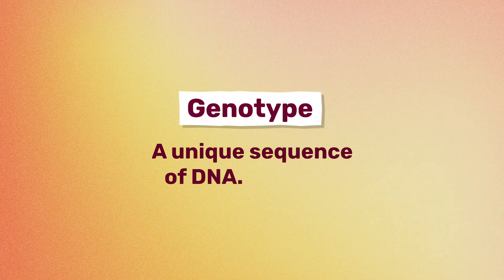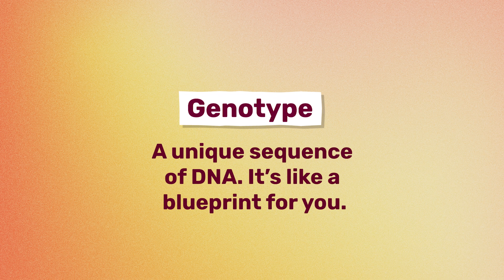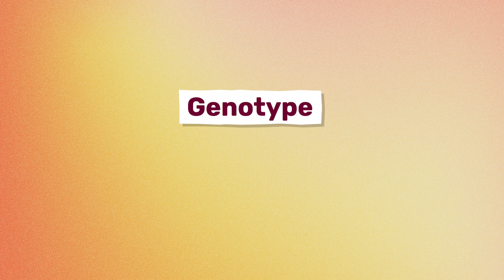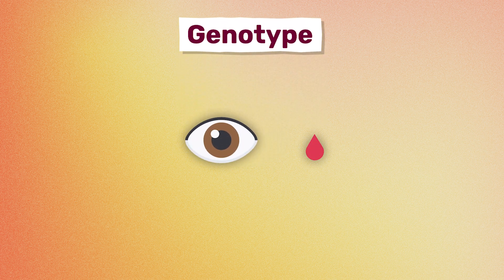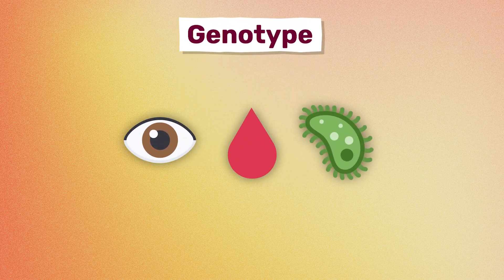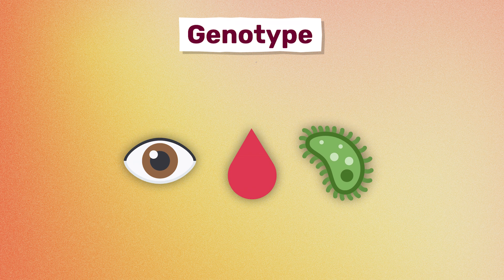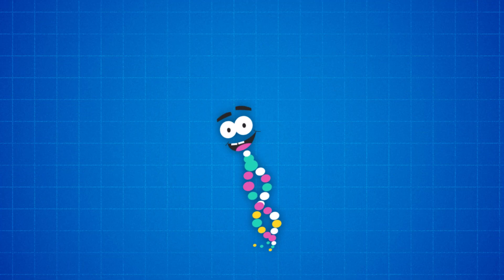A genotype is a unique sequence of DNA. It's like a blueprint for you. Everything from your eye color to your blood type to your susceptibility to certain diseases can be identified through your genotype. See? Jurassic Park kind of nailed it. We see you, Mr. DNA.